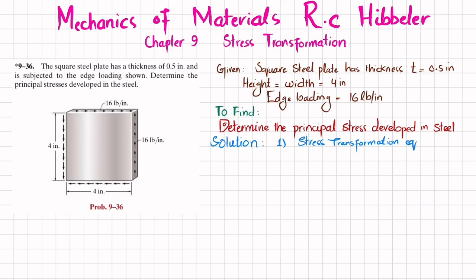You can see this is an edge loading given as 16 pounds per inch. In order to convert it into a load, we multiply 16 by the length of 4 inches. That converts this load into a shear load Fs, which is equal to 16 multiplied by 4, giving 64 pounds.